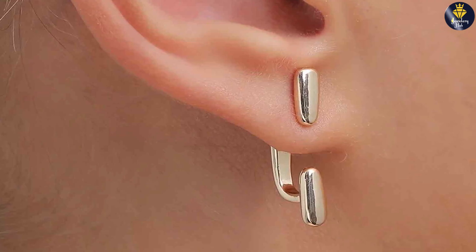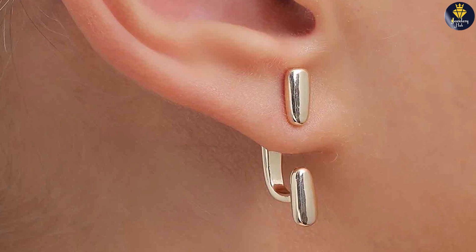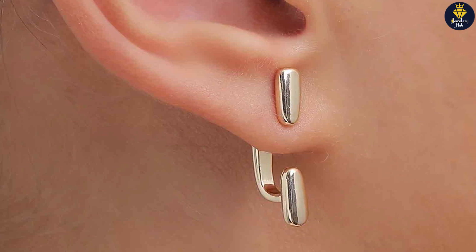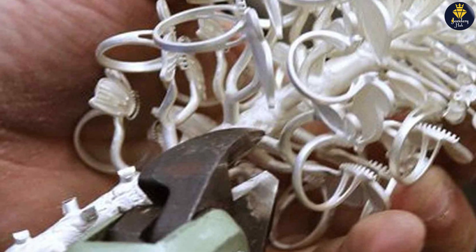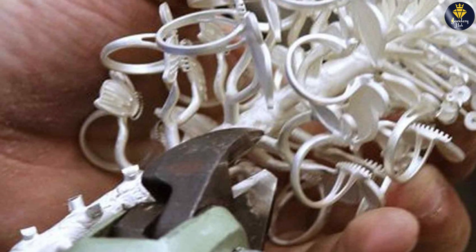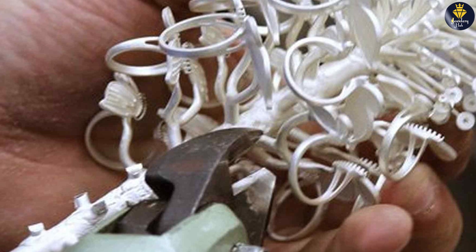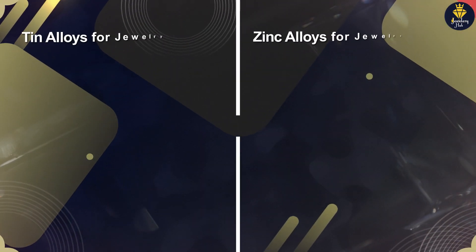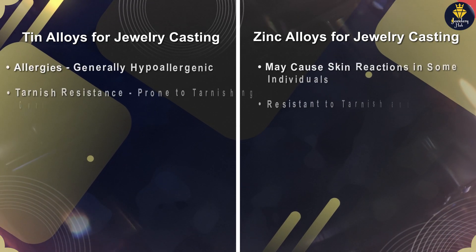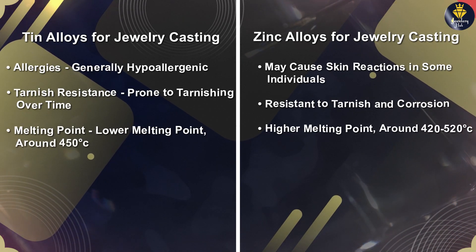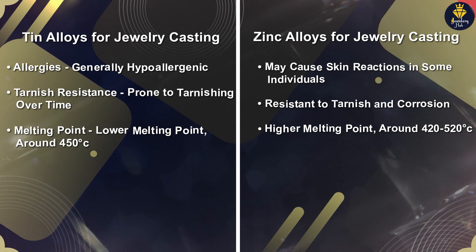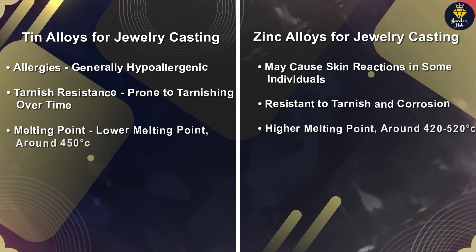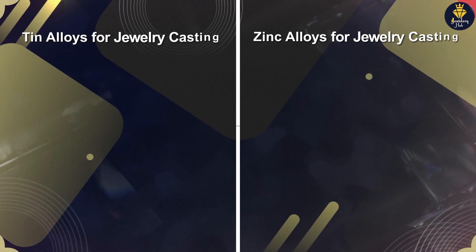On the other hand, if you prioritize strength, durability, and resistance to corrosion, zinc alloys might be the better option. They provide excellent casting properties and offer a higher level of robustness. Additionally, the ability to plate zinc alloys with precious metals adds a touch of elegance to the final product. However, be prepared for the higher melting point and potentially higher production costs. Ultimately, the choice between tin alloys and zinc alloys depends on the specific requirements of your jewelry project.